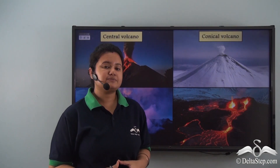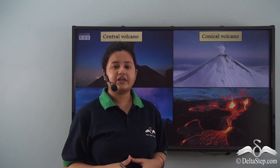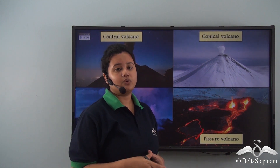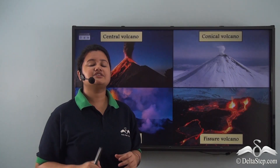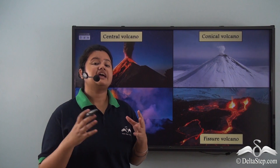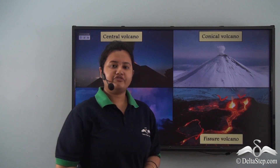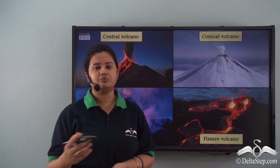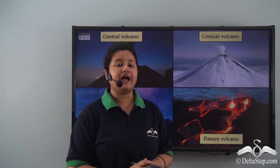In the fourth picture, lava and volcanic materials come out through two openings. This type of volcano is called a fissure volcano. In a fissure volcano, lava and volcanic materials come out not from a single point but through multiple cracks or fissures. Eruptions occur at regular time intervals, and therefore sheets of lava are formed in steps.